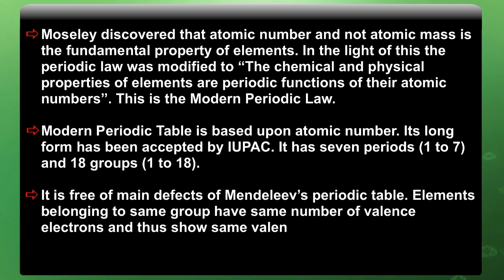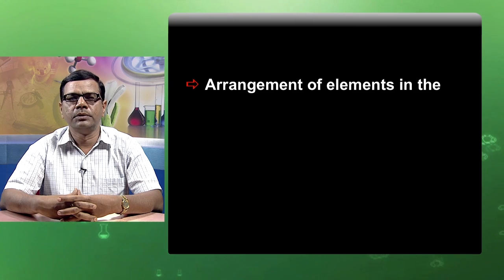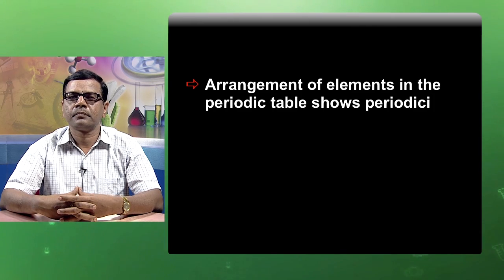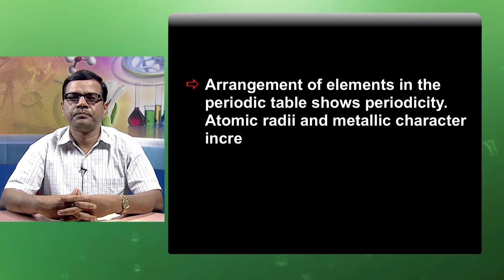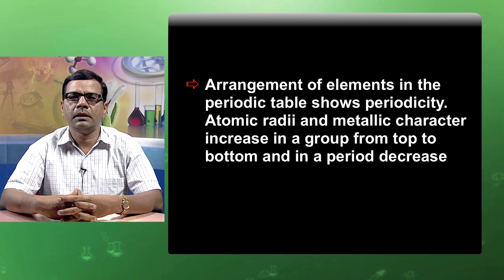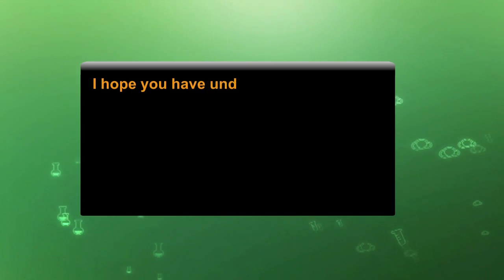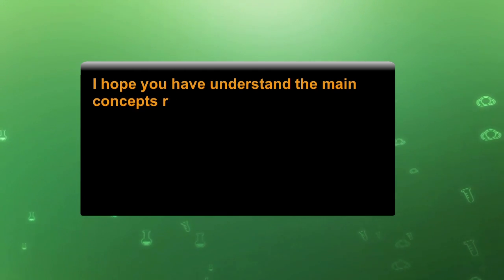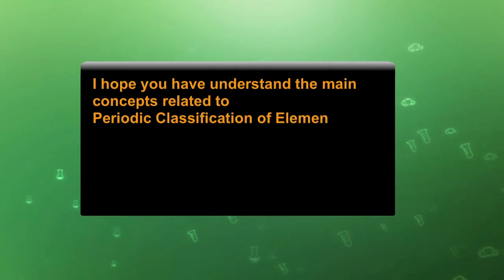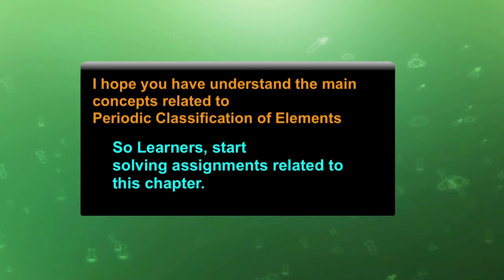Elements belonging to the same group have the same number of valence electrons and thus show the same valency and similar chemical properties. Arrangement of elements in the periodic table shows periodicity: atomic radii and metallic character increase in a group from top to bottom, and decrease in a period from left to right. I hope you have understood the main concepts related to periodic classification of elements. Learners, start solving your assignments related to this chapter.